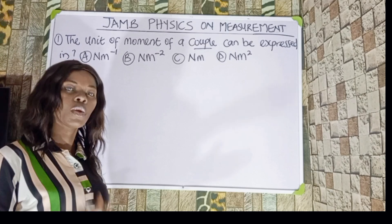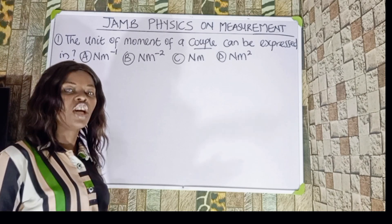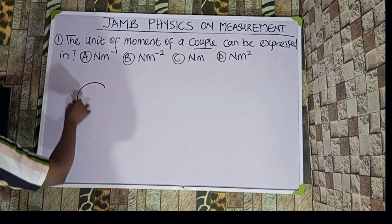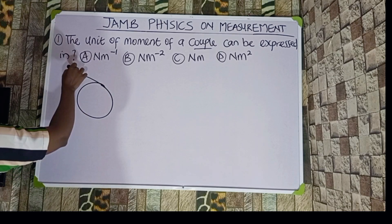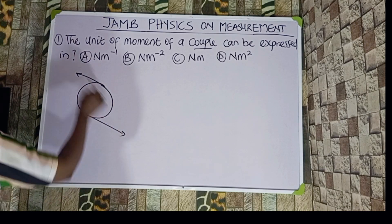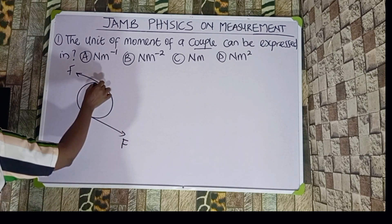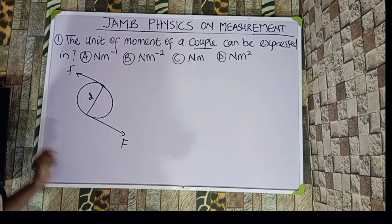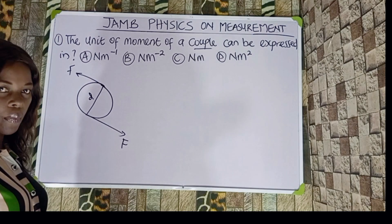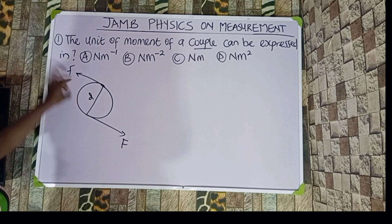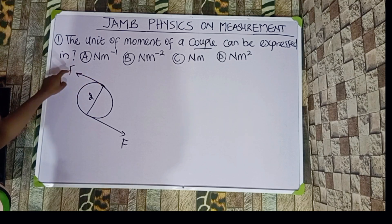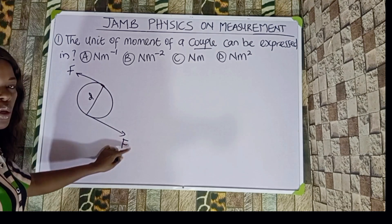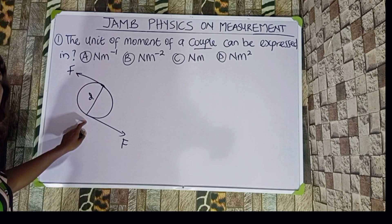A couple is defined as two equal but oppositely directed parallel forces not acting in a straight line. Let me do an illustration of that. This is the diagram for a couple. This diagram is going to help us know what the moment of a couple is. These are the two parallel forces — the first force and the second force — not acting in a straight line. They are equal but opposite to each other, separated by a diameter.